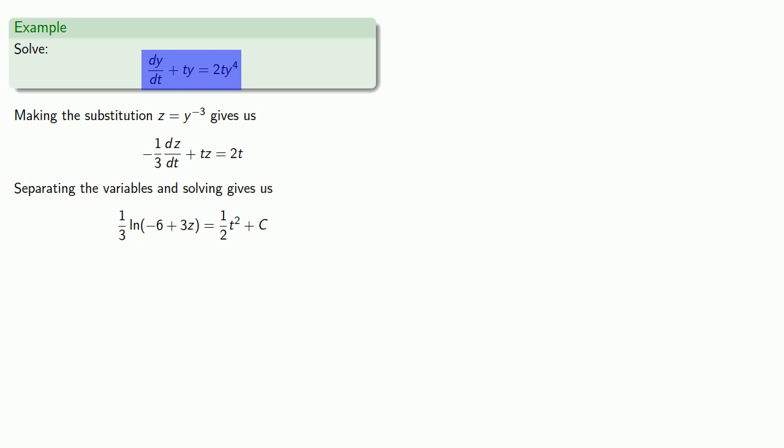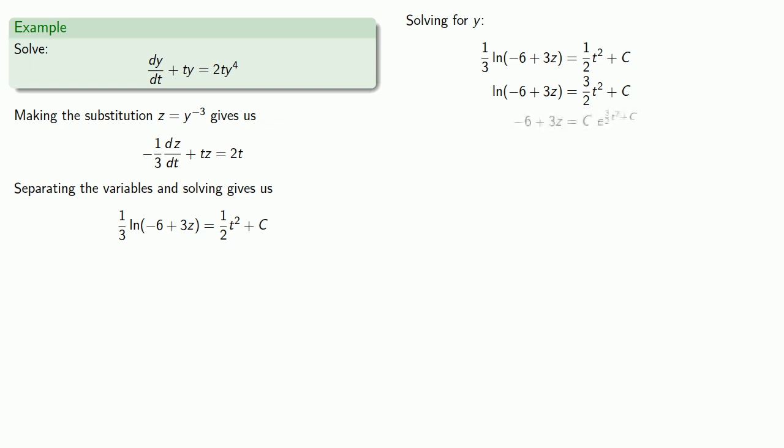Since our original differential equation was in terms of y, we can't actually leave a solution in terms of z. So we'll need to solve for y. So first, we'll solve our equation for z. And since we wrote down that z equals y to the power minus 3, we can recover y, which gives us our solution. We'll be right back.